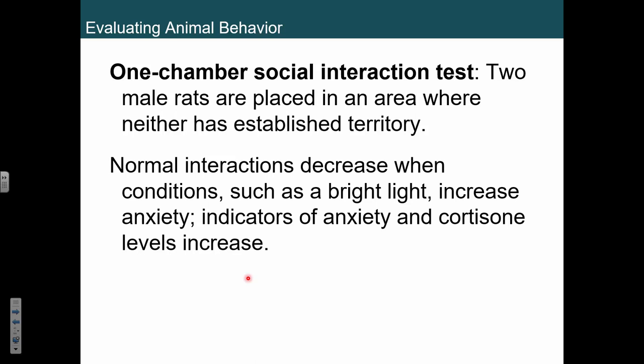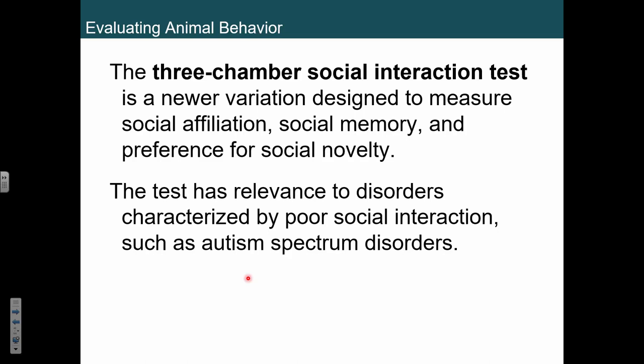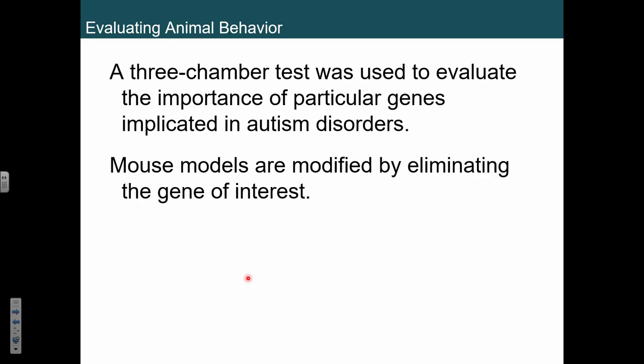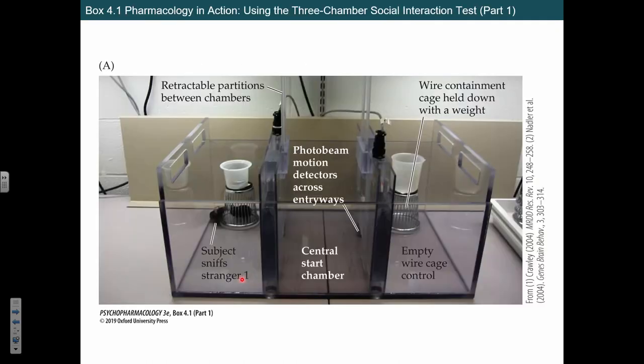There's also the zero maze — it's like a fancy donut version. For social interactions, there's the one-chamber test where you put a bunch of rats in one chamber and see if they interact with each other. There are also other multi-chamber setups where you can see if they remember another animal they've seen before, and how much they prefer one animal versus another, if you want more advanced social interaction measurements.